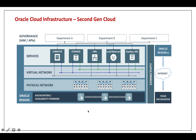Availability Domains exist to provide fault tolerance and high availability. Don't confuse this with Data Regions: Data Regions provide disaster recovery across geographies, while Availability Domains are inside a single region — typically three ADs — providing fault tolerance and high availability. The latency between each AD is less than 500 microseconds — microseconds, not milliseconds. That is a very important distinction.